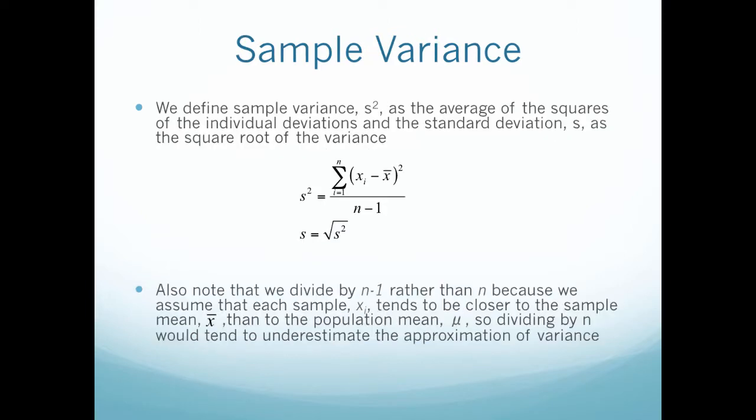We define sample variance, s squared, as the average of the squares of the individual deviations and the standard deviation, s, as the square root of the variance. This formula is very similar to the one for population except now we divide by n minus 1 rather than just n.